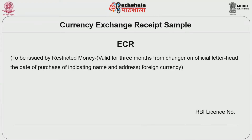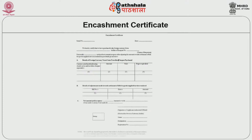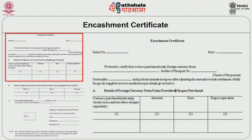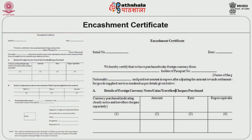There are different formats for getting foreign currency exchanged for guests who are residents of the hotel. In the currency exchange receipt — the encashment certificate — there will be the name of the foreign currency, RBI license number, serial number, and date. It will certify which date the foreign currency was transacted. The holder's passport number and nationality will be given, and the net amount paid in rupees after adjustment towards settlement of bills. Details of foreign currency notes or traveller's cheques purchased, along with the rate and rupees equivalent, will also be given.